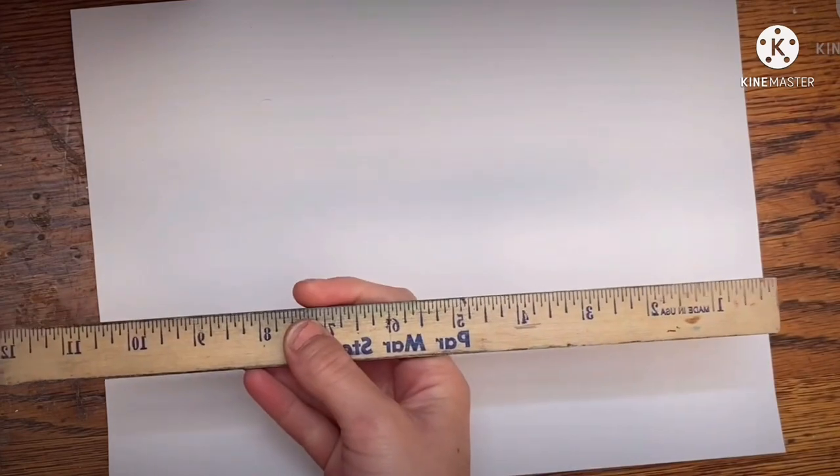All right, now what you are going to need to draw your Romero Brito inspired fruit bowls is a piece of paper. You're going to need a ruler for drawing lines because we're going to be drawing a lot of straight lines.